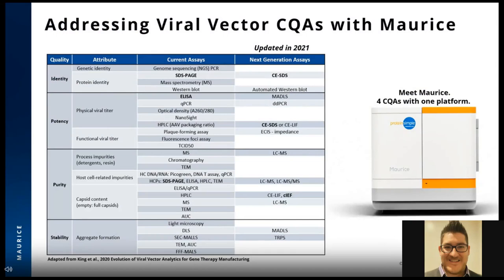The Maurice platform solves key challenges by supporting several viral vector CQAs on a single capillary electrophoresis platform with a small footprint and modest capital investment. Maurice CESDS can support viral vector identity, potency, and purity. Additionally, with our CIEF mode, capsid content analysis can be enabled and can help with particle stability characterization as well.